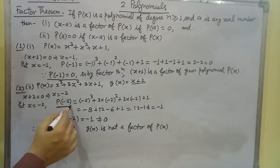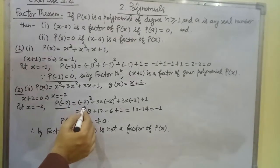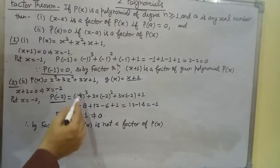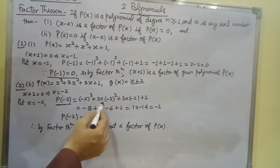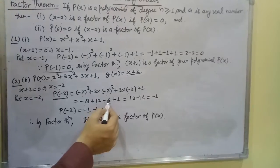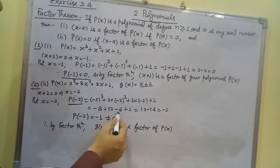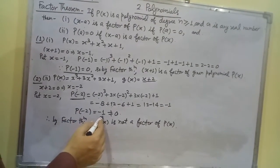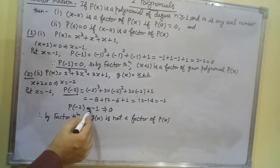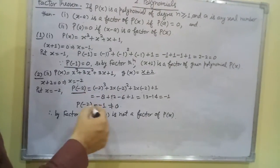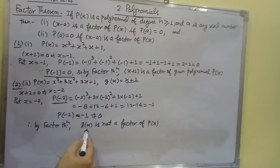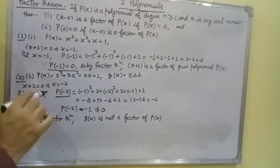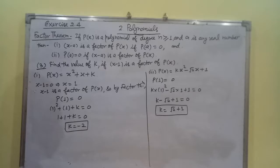We check P(-2) by substituting x = -2: (-2)³ + 3(-2)² + 3(-2) + 1 equals minus 8 plus 12 minus 6 plus 1, which equals minus 1. Since P(-2) equals minus 1, which is not equal to 0, by the Factor Theorem, G(x) is not a factor of P(x).